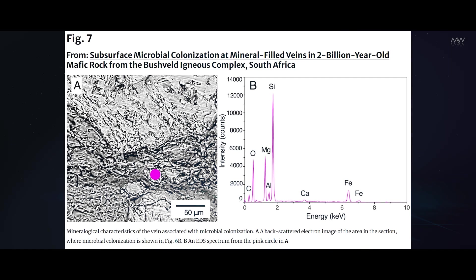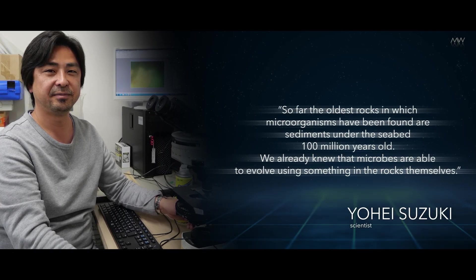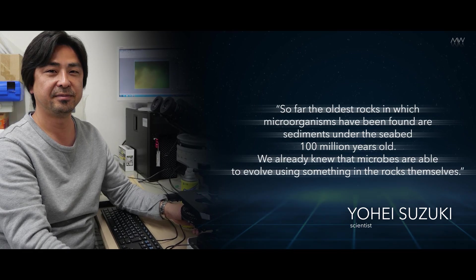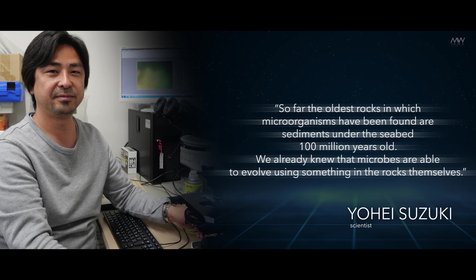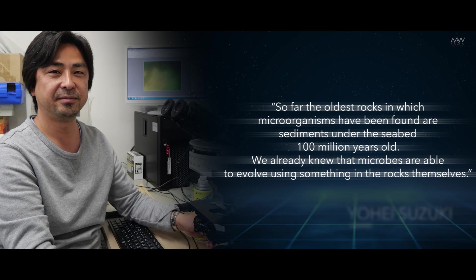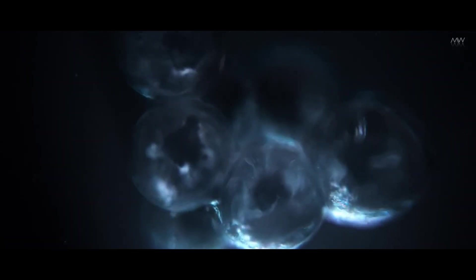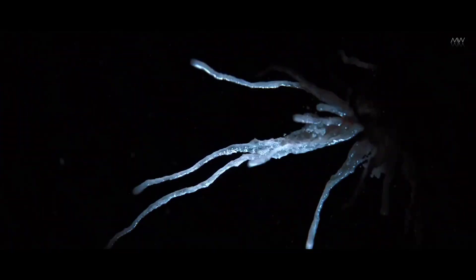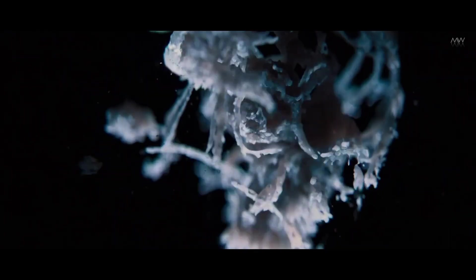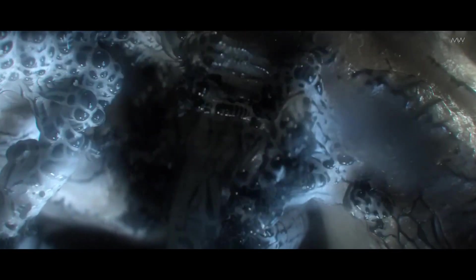As the study leader specifies, without too much modesty, so far the oldest rocks in which microorganisms have been found are sediments under the seabed 100 million years old. We already knew that microbes are able to survive using something in the rocks themselves. Such isolated cells can take thousands or even millions of years to divide. There was really no hurry in their prison, and rushing would be too wasteful of the extremely limited resources locked up. When resources run out, such cells fall into a kind of hibernation, anabiosis, and can come back to life when more favorable conditions appear.